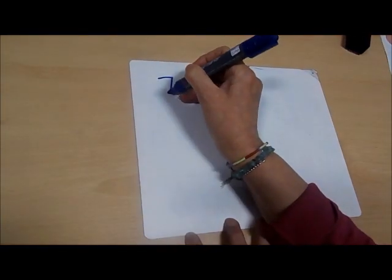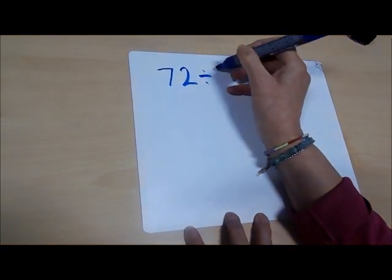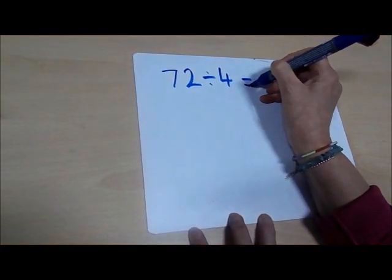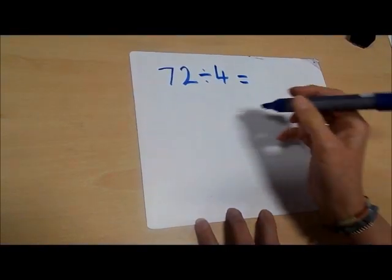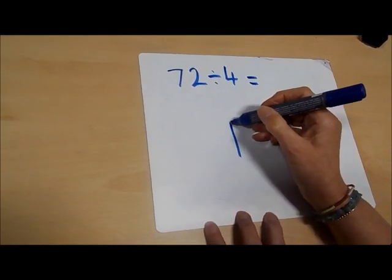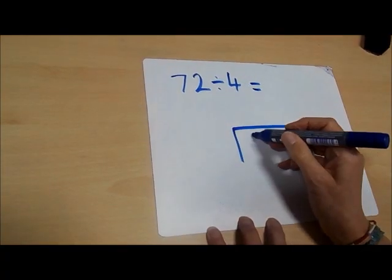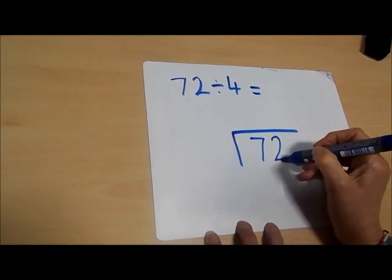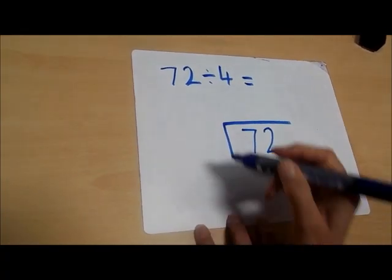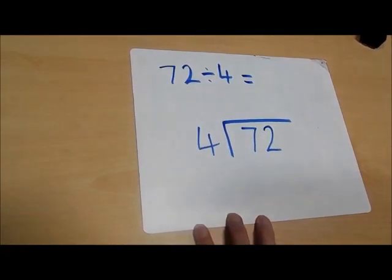So if we set out our calculation — 72 divided by four — this is the way we write down this calculation. The 72 goes here and four goes here.